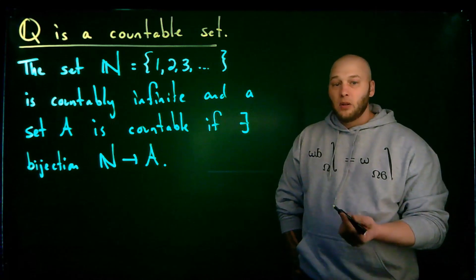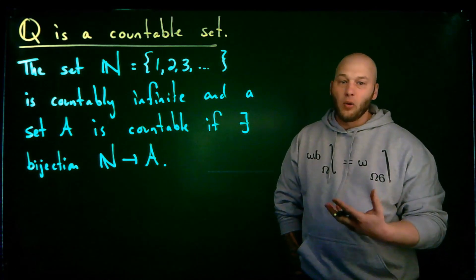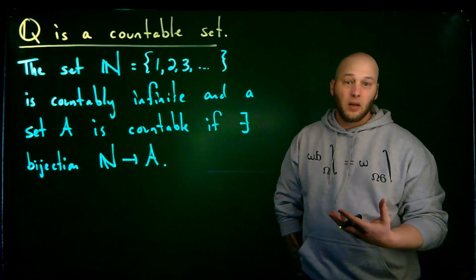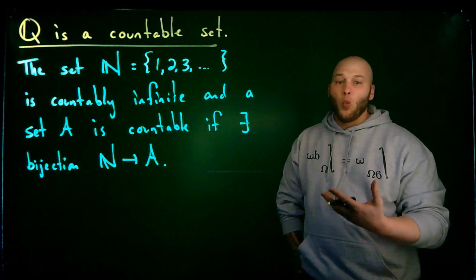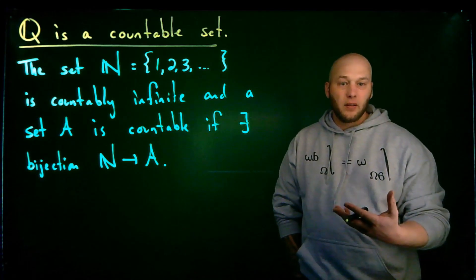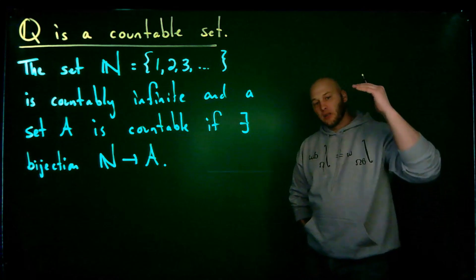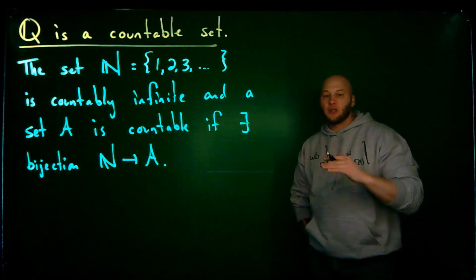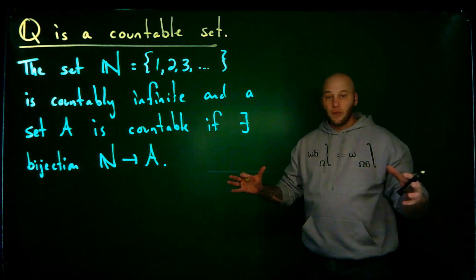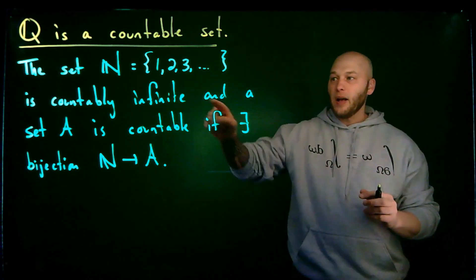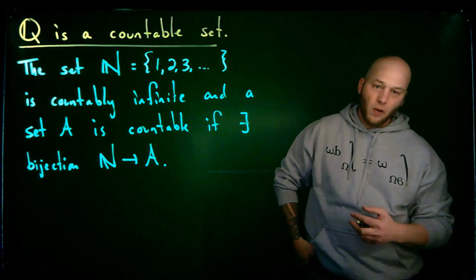What I'm going to do is show that the set of all rational numbers — which consists of the set of all fractions: one half, one third, two fifths, nine sevenths, etc., where there's an integer on top, integer on the bottom, and the integer on the bottom is not zero — has the exact same number of elements as the collection 1, 2, 3, etc.